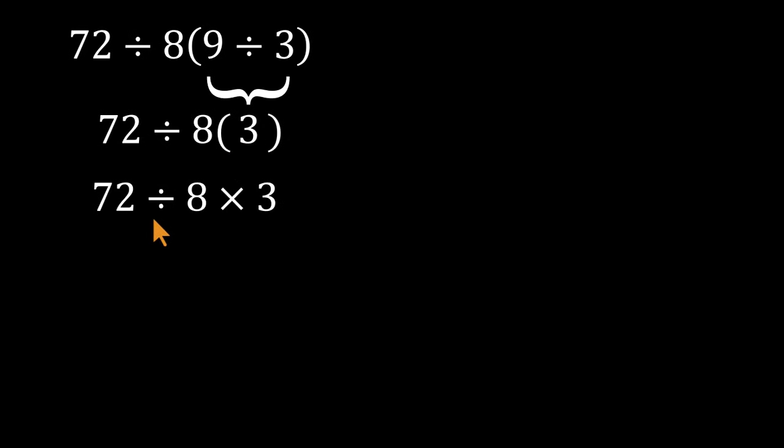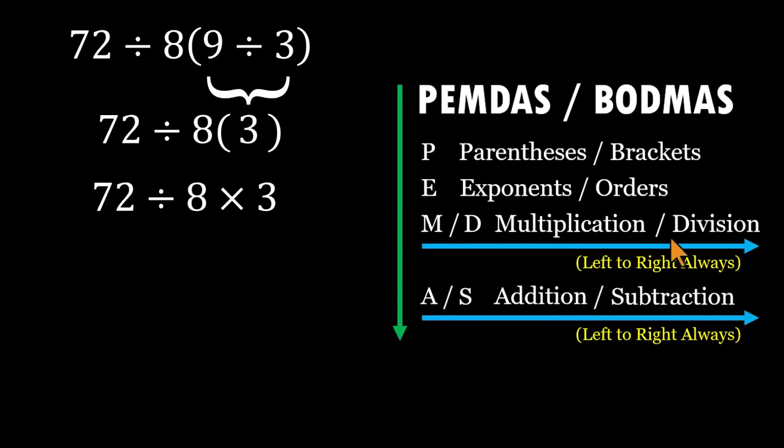After that, we're left with division and multiplication side by side. And under PEMDAS or BODMAS, division and multiplication have equal priority. When that happens, there's only one rule that matters. Go strictly left to right.